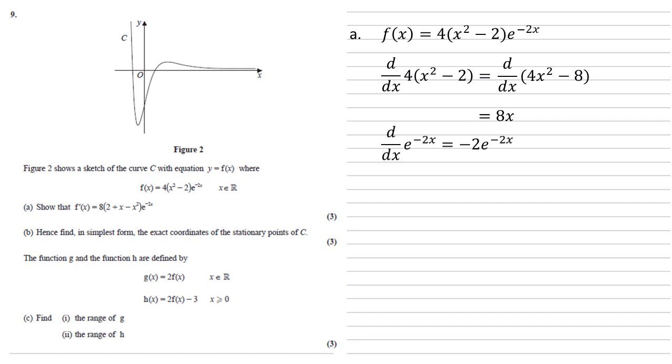Differentiating the second part, the e to the minus 2x, the minus 2 comes down, the power remains the same. So we get minus 2 e to the minus 2x.